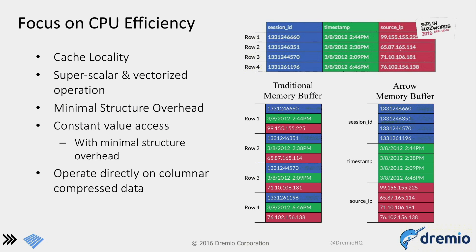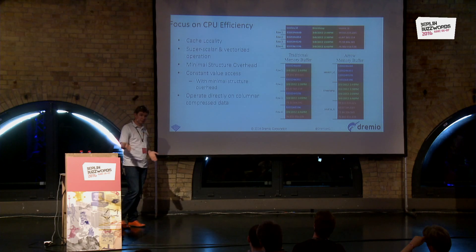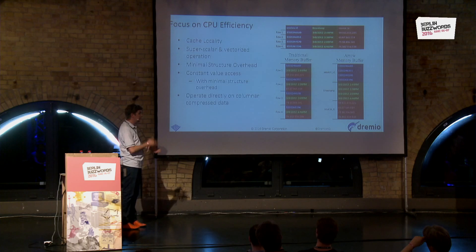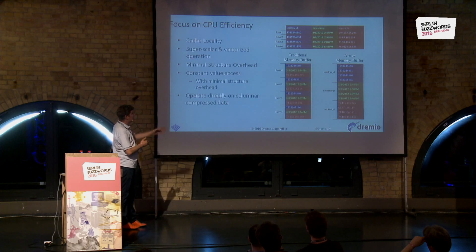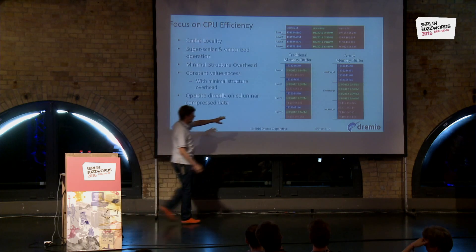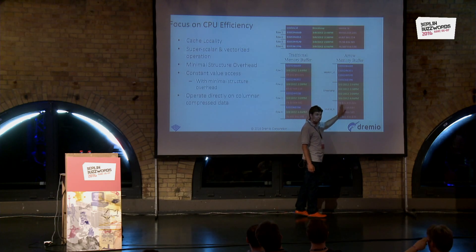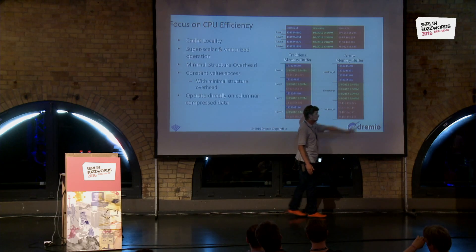The one thing I didn't mention was SIMD — single instruction, multiple data. The CPU has instructions that say 'process the same thing on four values in parallel.' When you use those instructions, it's a plain 4x throughput increase. Thanks to the columnar representation, it's easy to say 'do four times the same instruction again and again.'